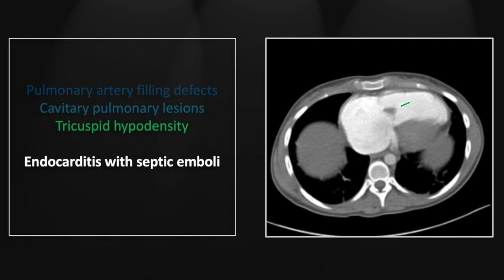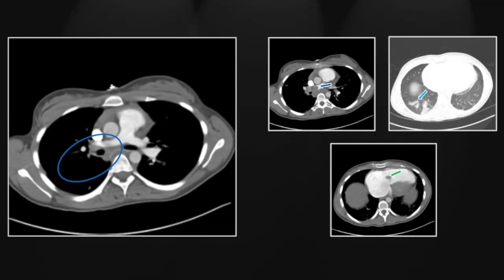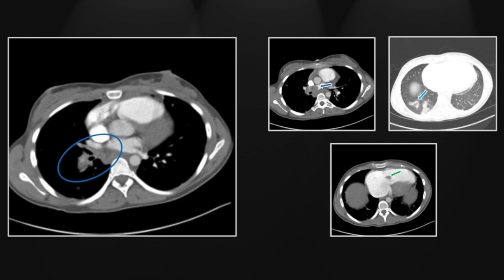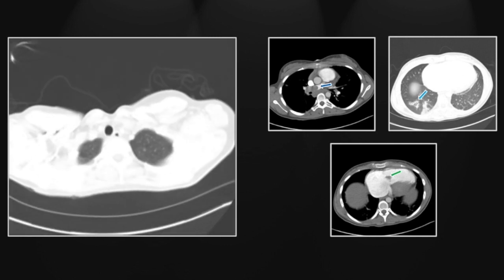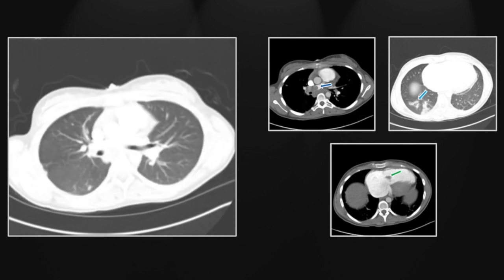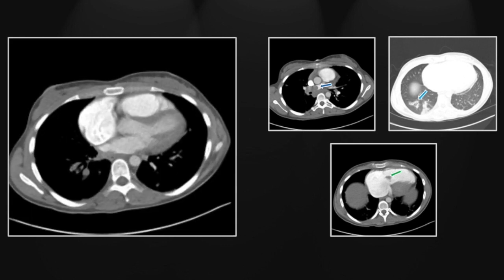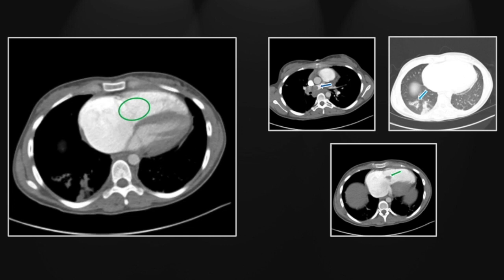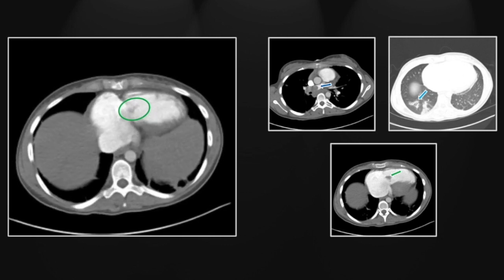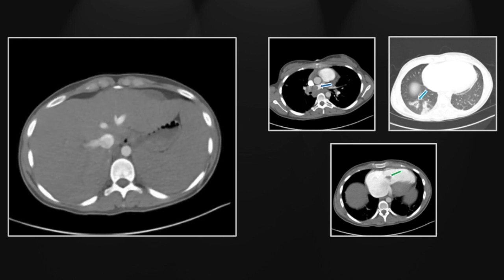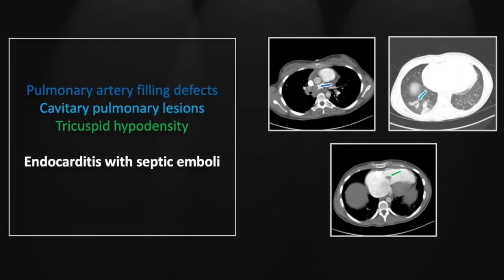There is a sizable vegetation on the tricuspid valve. Note also marked right atrial enlargement, consistent with valvular incompetence. The filling defect is again seen in the right pulmonary artery extending down into the lower lobe. On lung windows, there are multiple cavitary lesions, most notably in the right lower lobe, and this rather striking vegetation on the tricuspid valve. Hepatic venous and IVC backflow is also visible, consistent with valvular incompetence.